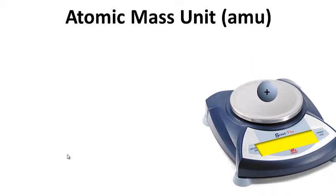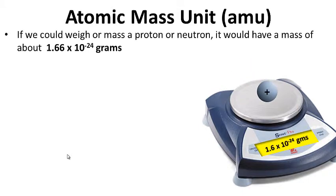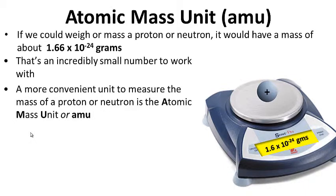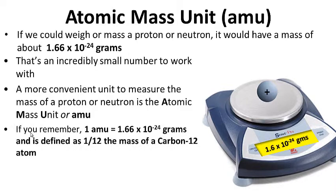Atomic mass unit, or AMU. A little review: if we could weigh a single proton or neutron, it would have a mass of about 1.66 times 10 to the negative 24th grams — an incredibly small number to work with. A more convenient unit is the atomic mass unit or AMU. One AMU is equal to 1.66 times 10 to the negative 24th grams, and is defined as one-twelfth the mass of a carbon-12 atom — essentially the weight of a proton or neutron.